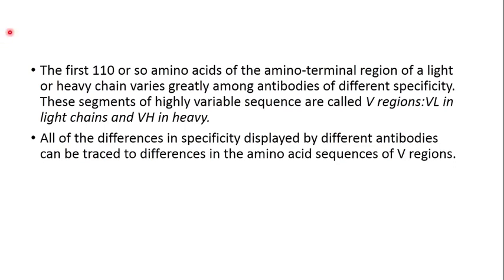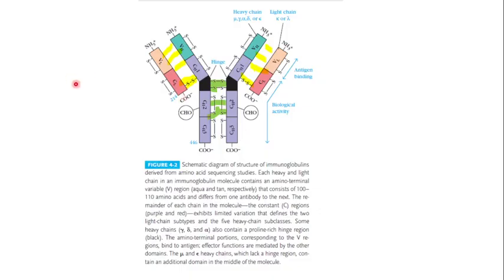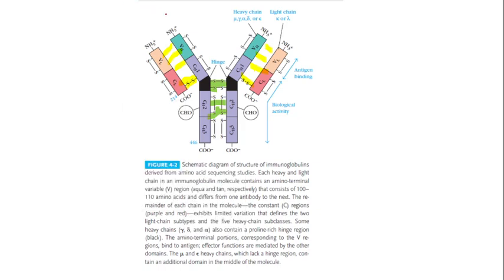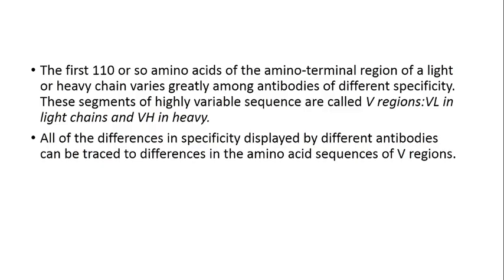The first 110 or so amino acids of the amino-terminal region of the light and/or heavy chain vary greatly among antibodies of different specificity. We can see these approximately 110 amino acids at the amino-terminal region of both the light and heavy chains vary greatly among antibodies of different specificity.